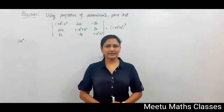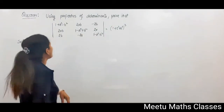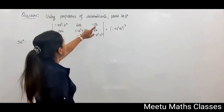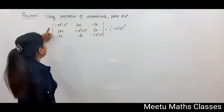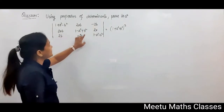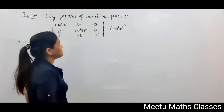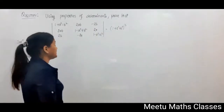Hello students, welcome to maths classes. Your question is: using properties of determinants, prove that this determinant is equal to (1 + a² + b²) raised to power 3.